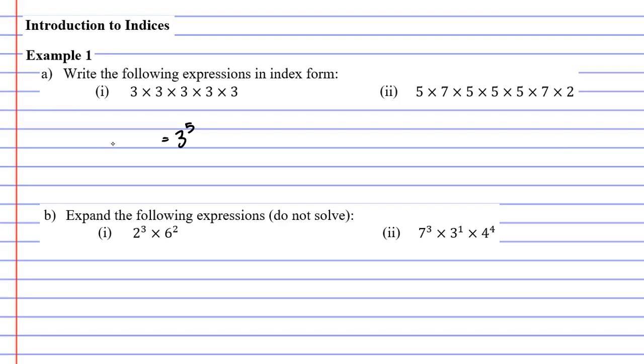Moving on to the second part of question A. You'll notice we've got quite a few different numbers here — we've got 5s, we've got 7s, and we've got a 2. So what I'm going to do is write each one down: 2, 5, and 7, just once, with times signs between them.